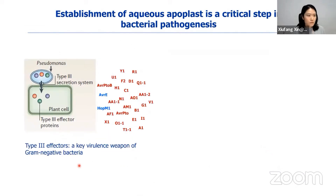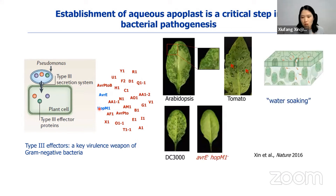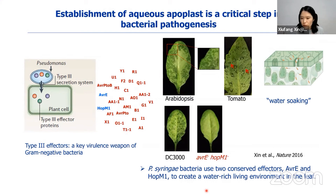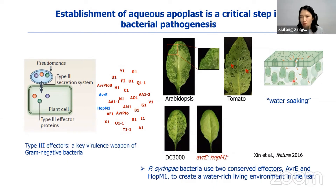For gram-negative bacteria including Pseudomonas syringae, one key virulence weapon is called type 3 effectors — a class of virulence proteins translocated into the plant cell from the bacteria through a specialized secretion system. The bacteria I work with generates 36 effectors. Through my postdoc work, I discovered that this bacterium can use a conserved effector called AvrE/HopM1 to create a water-rich living environment in the leaf — what we call water soaking. You can see here dark spots representing water soaking in leaves infected by Pseudomonas syringae bacteria. This also occurs in the natural host tomato, and if we mutate AvrE/HopM1, the visible water soaking is abolished.